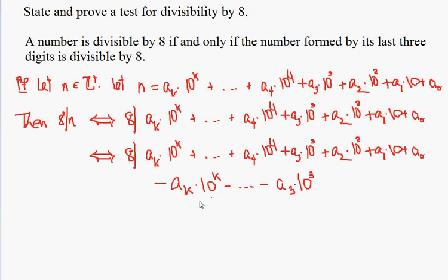And therefore we conclude that 8 divides n if and only if 8 divides a sub 2 times 10 squared plus a sub 1 times 10 plus a sub 0. And this last number of course is the number formed by its last three digits.